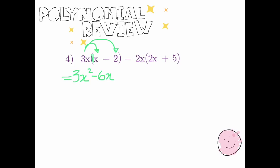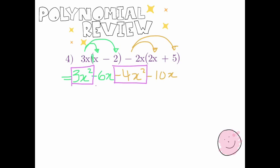Moving on to the second bracket: negative 2x times 2x — negative 2 times 2 is negative 4, and x times x is x squared. Then negative 2 times positive 5 is negative 10, and since there's no letter on the 5, we just attach that x to the 10. Again, we're going to collect like terms. As you get better at these questions you don't have to draw shapes for this step — it was more grade 9 work — but while you're practicing, go ahead and do it.